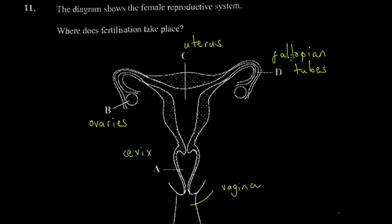The fallopian tubes are a canal that facilitates the movement of the egg from the ovary into the uterus. The egg moves and then stays in the fallopian tube for some time, and then sperm travels up and meets it there. Normal fertilization takes place in the fallopian tube. After fertilization, the resulting cell is called a zygote — formed when the sperm cell and the ovum unite. Ovum is the term for the egg in humans.